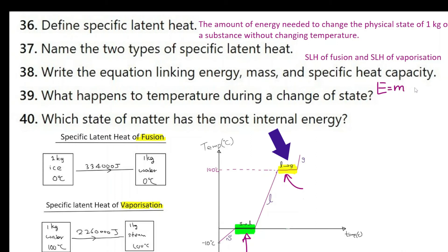Write the equation linking energy, mass and specific heat capacity. The formula here is E is equal to MC delta theta. We need to define the terms. E is energy, M is mass in kilograms, C is the specific heat capacity, delta theta here is the change in temperature. 39. What happens to temperature during the change of state? Now you can clearly see here it does not change. So it remains constant. Question number 40. Which state of matter has the most internal energy? Now the internal energy is dependent on the amount of kinetic energy that the particles have. Gas.